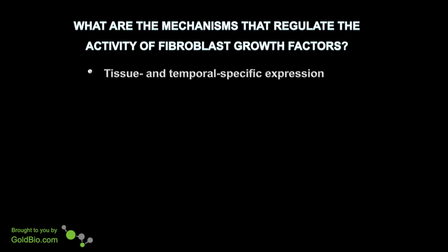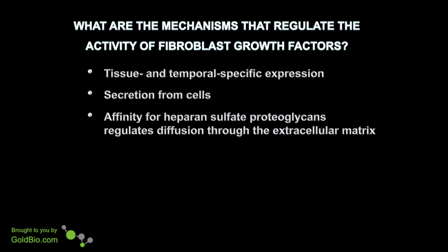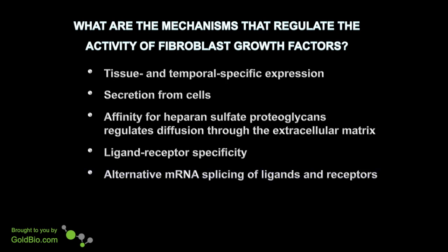What are the mechanisms that regulate the activity of fibroblast growth factor receptors? Several mechanisms are important because this is a very potent signaling pathway. Tissue and temporal specific expression patterns are key to determining when and where the FGF receptor system signals. Secretion from cells regulates the availability of FGF ligands. The affinity for heparin sulfate proteoglycans regulates diffusion through the extracellular matrix. Ligand receptor specificity orchestrates the interaction of the many different members of the FGF family with their receptors. Alternative mRNA splicing of ligands and receptors regulates the activity and specificity of FGF receptors, and the cofactor regulation of receptor binding, including heparin sulfate proteoglycan modifications.